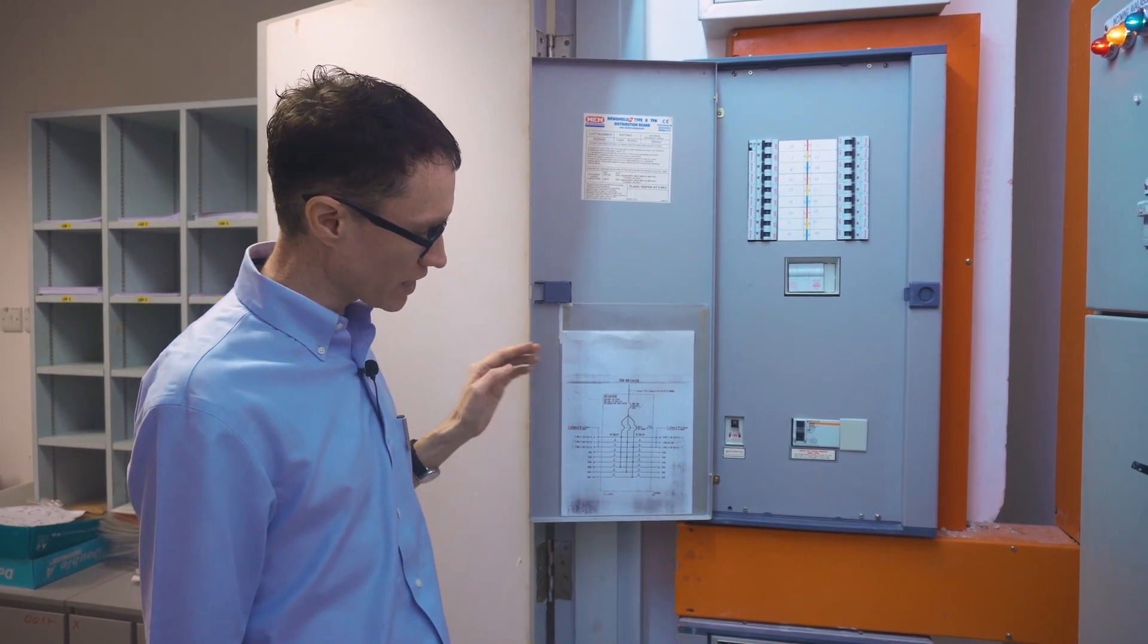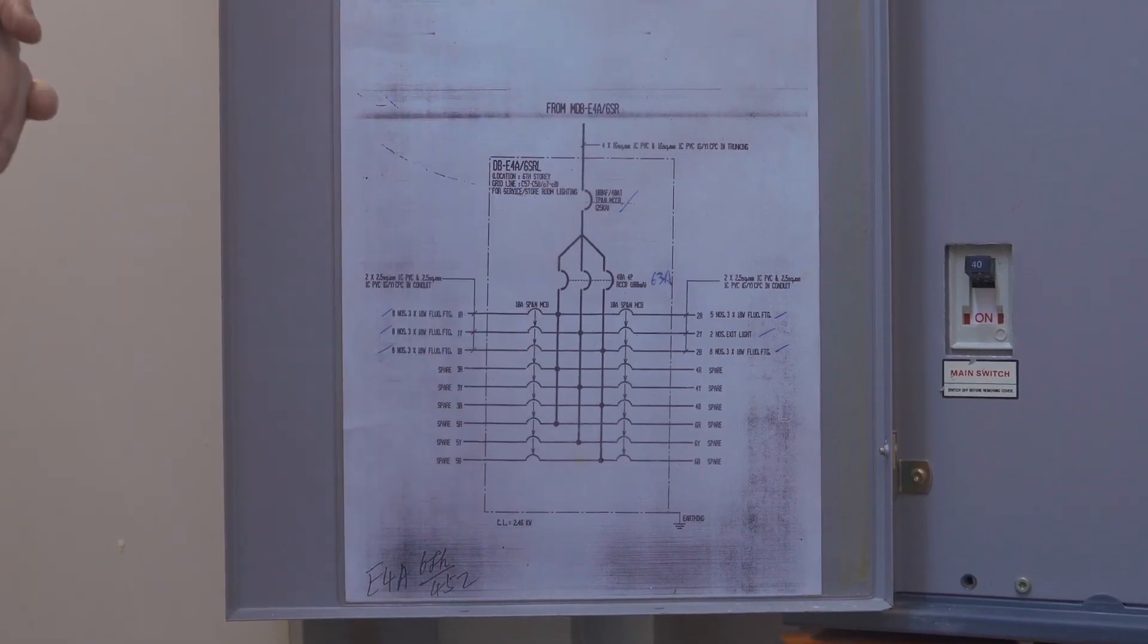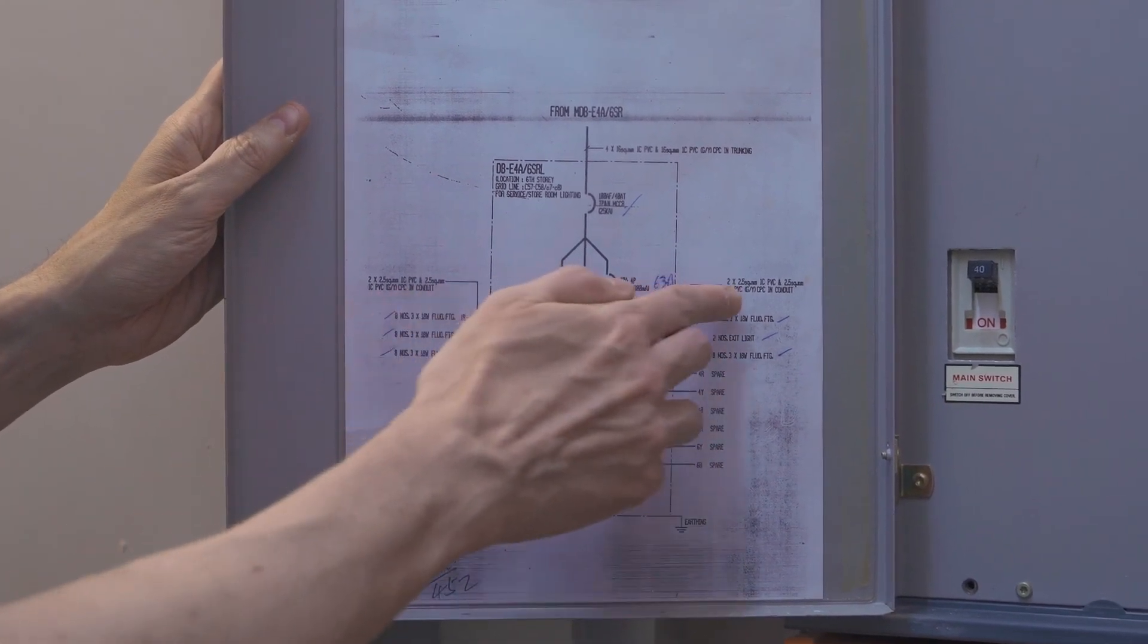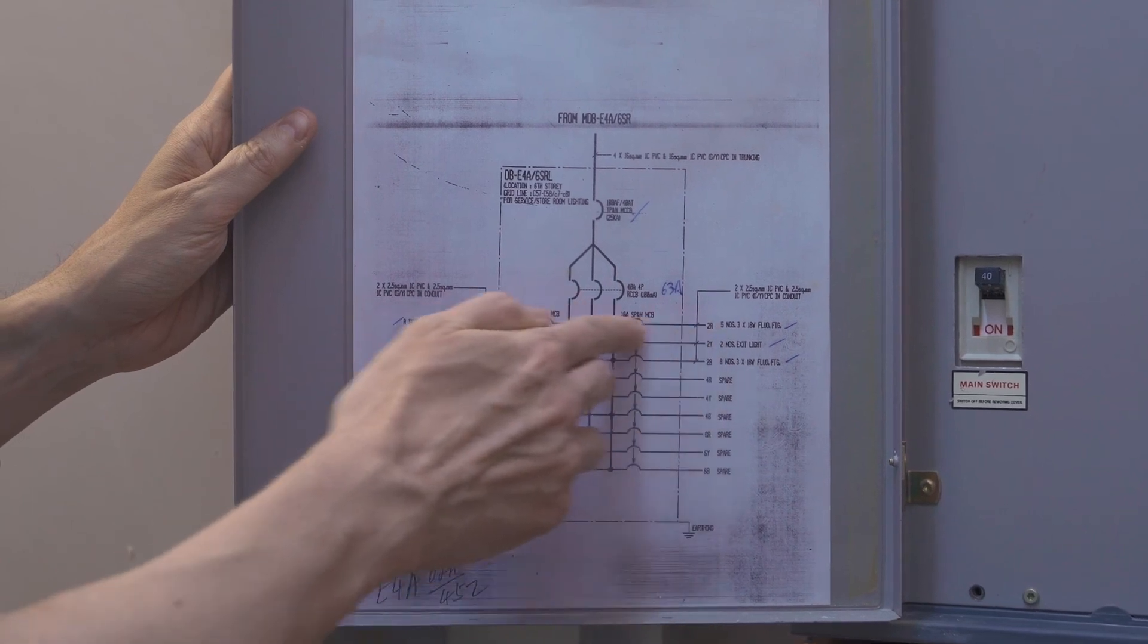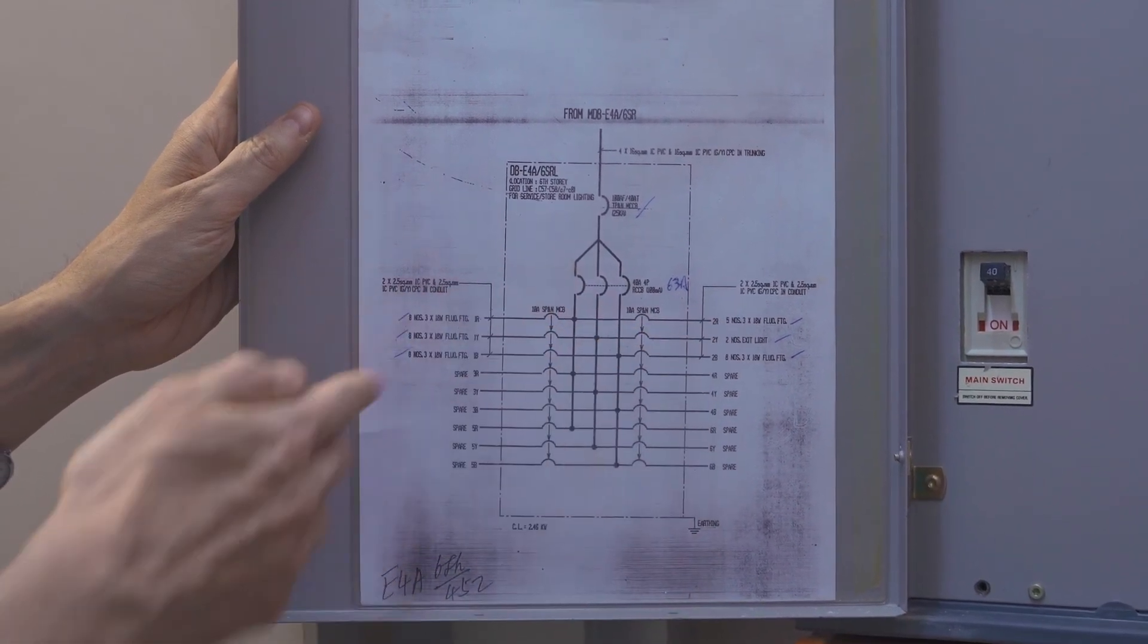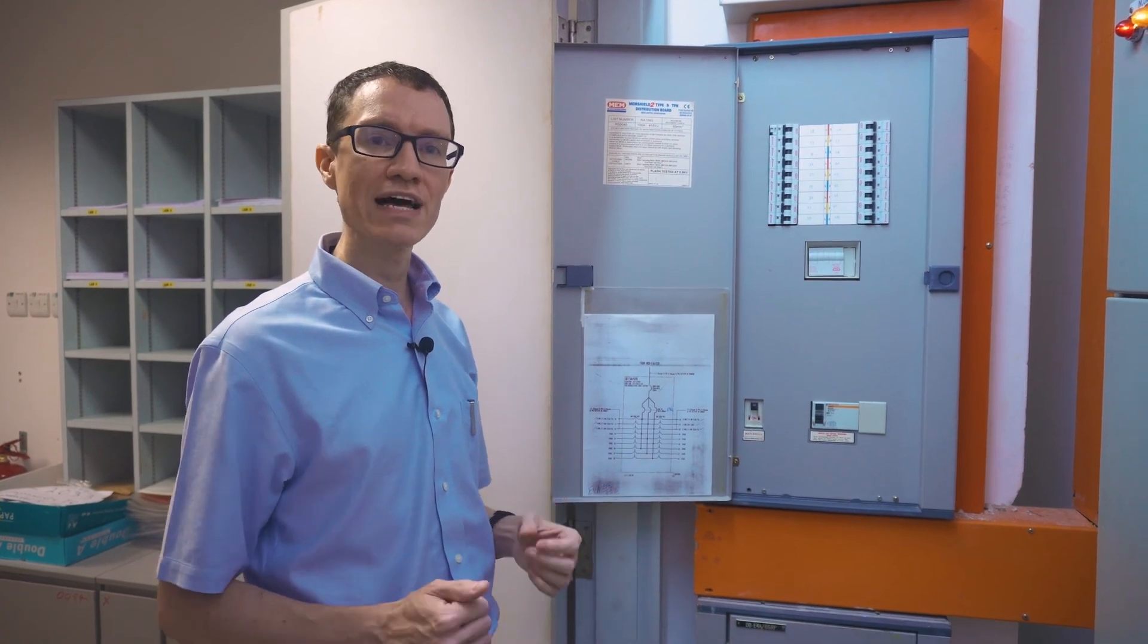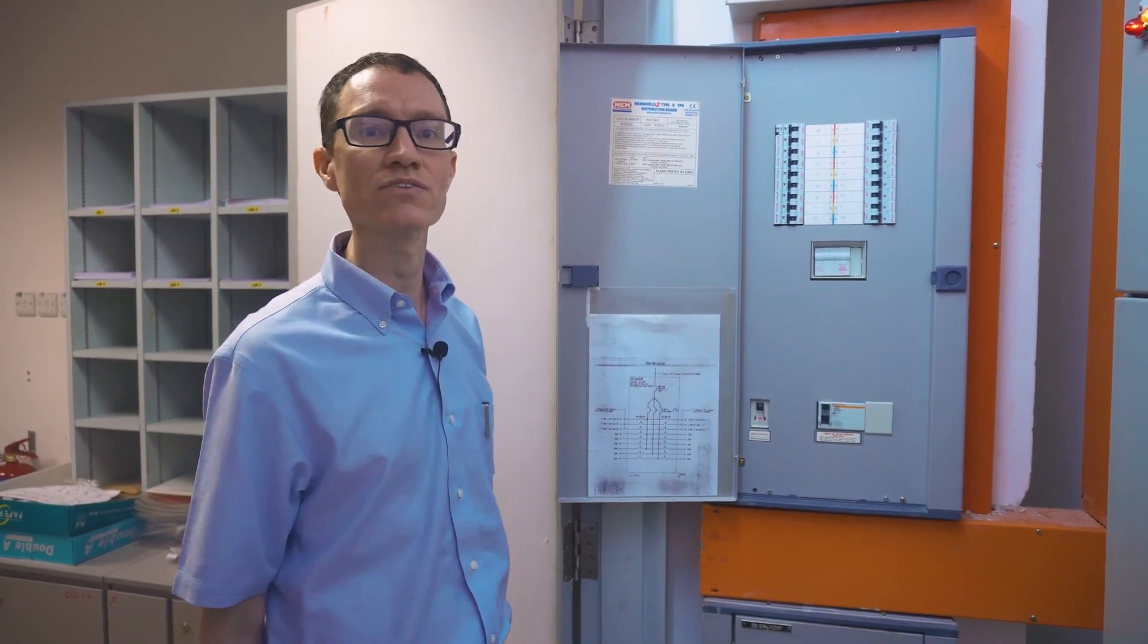This label right here also shows us in a pictorial way how the phases are distributed. So this picture of the box shows that we have three phases coming in here. And then the phases are tapped off in turn. First, the red phase is tapped off, then the yellow phase is tapped off, then the blue phase is tapped off, and then the process repeats. This ensures that power is distributed here in the lab in a sort of even-handed way among the three phases.